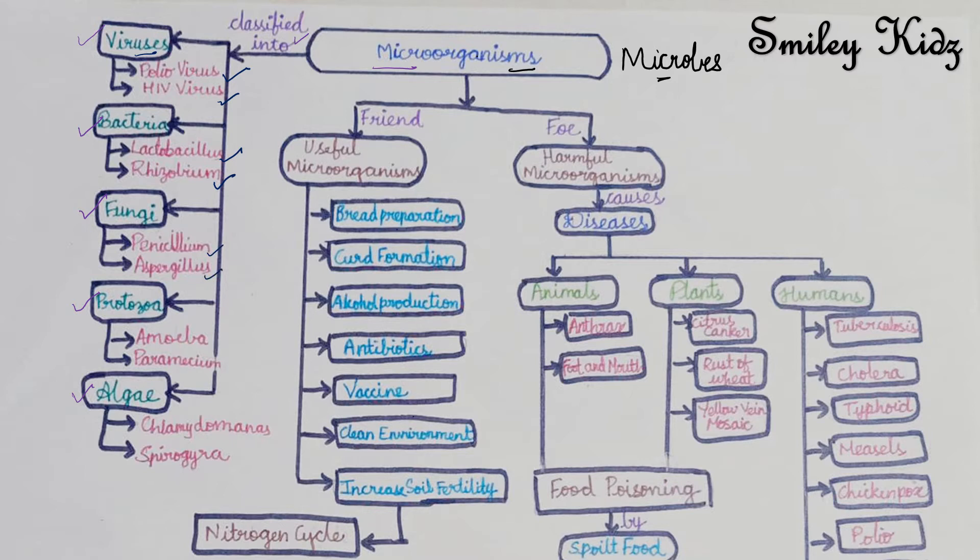Algae: chlamydomonas and spirogyra. So this is all about the classification of microorganisms.